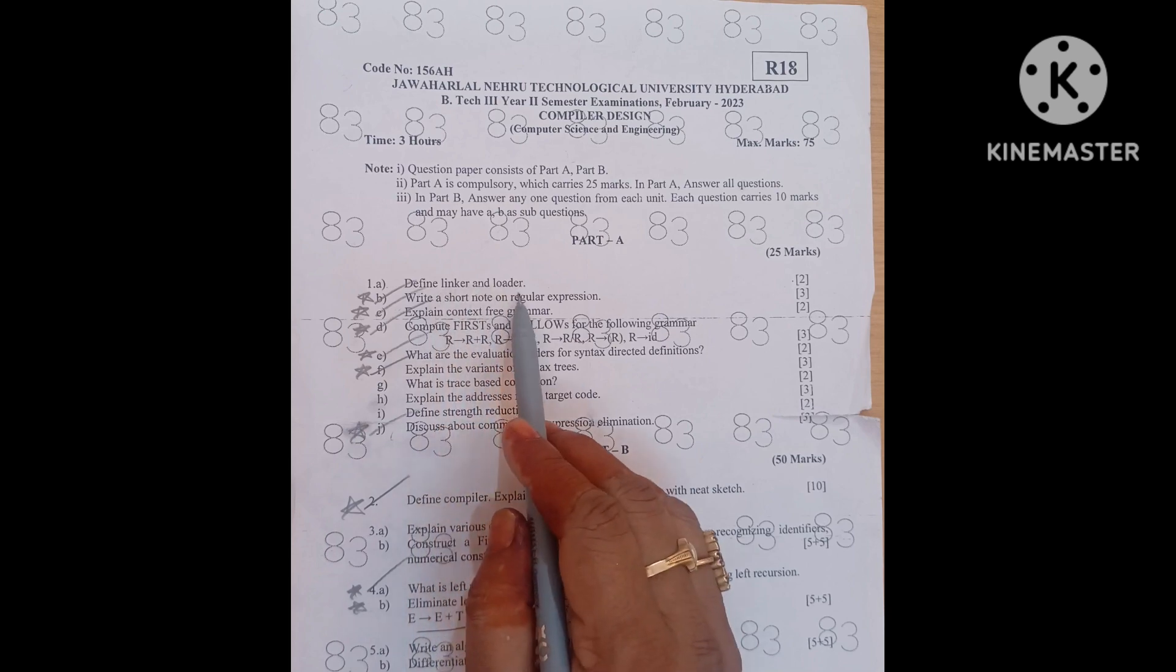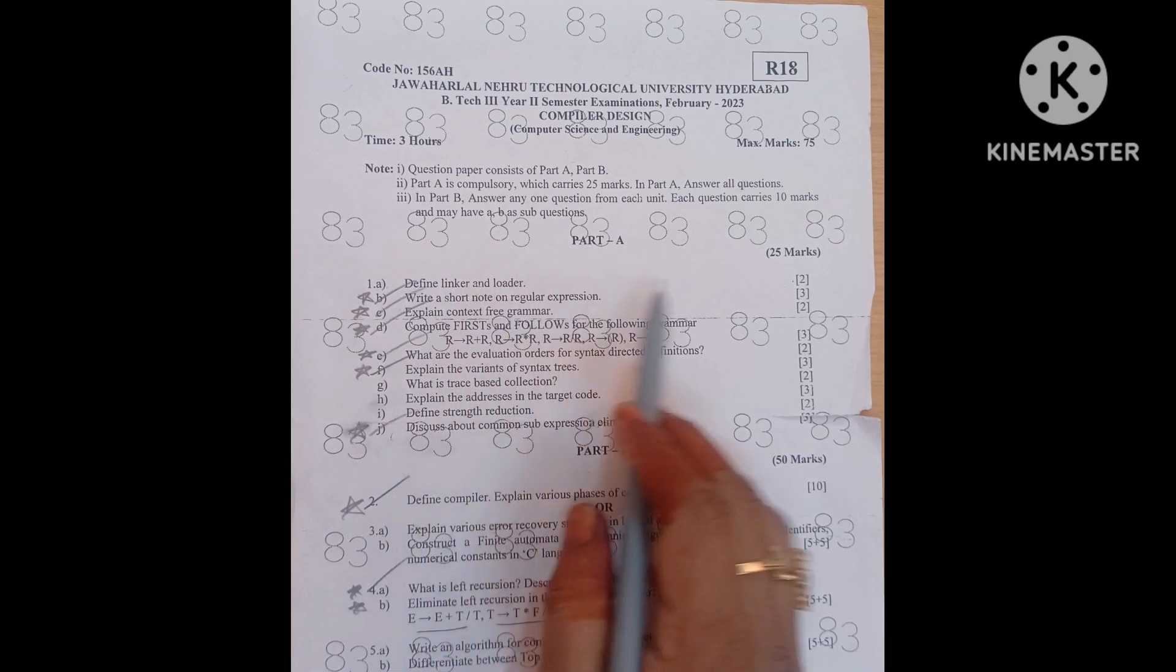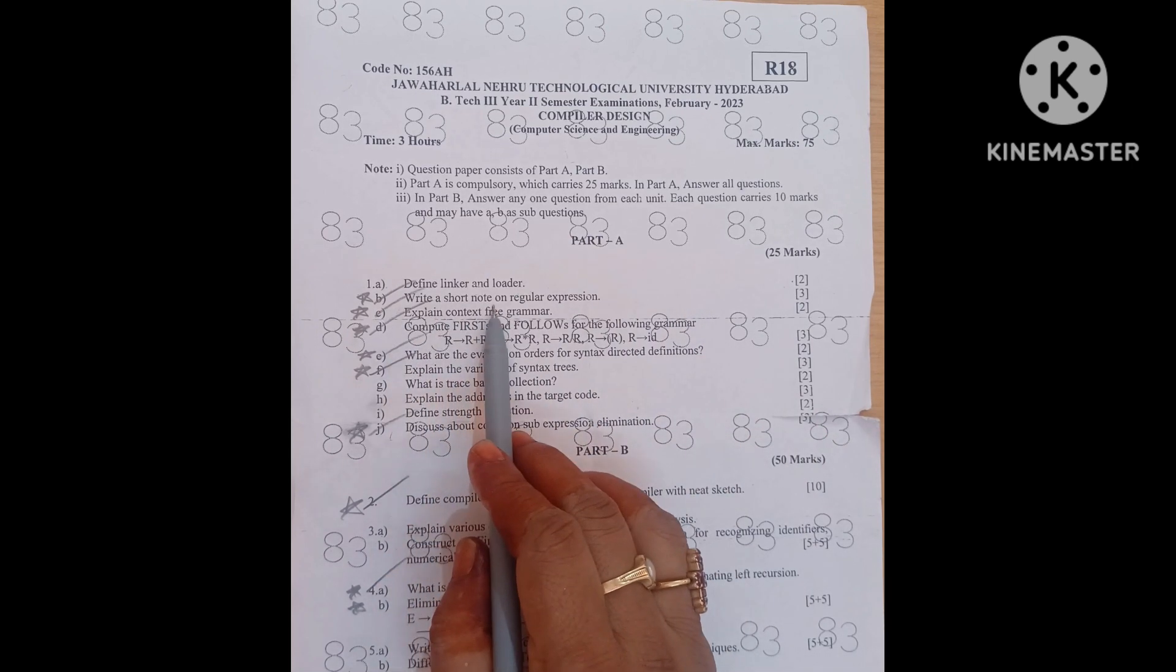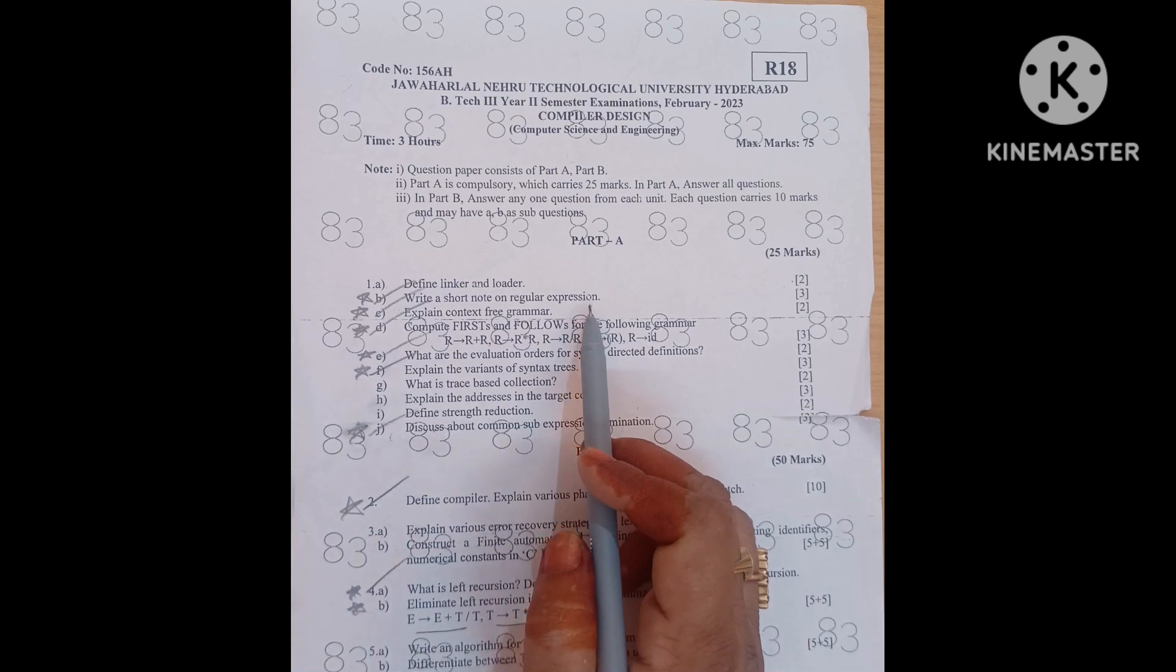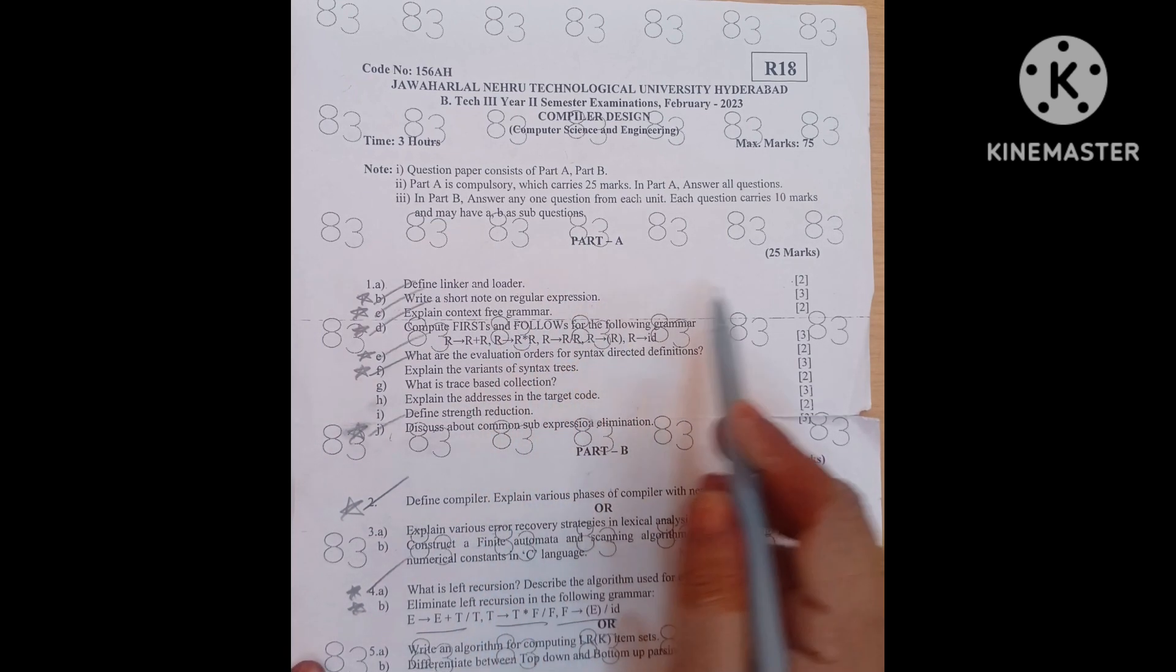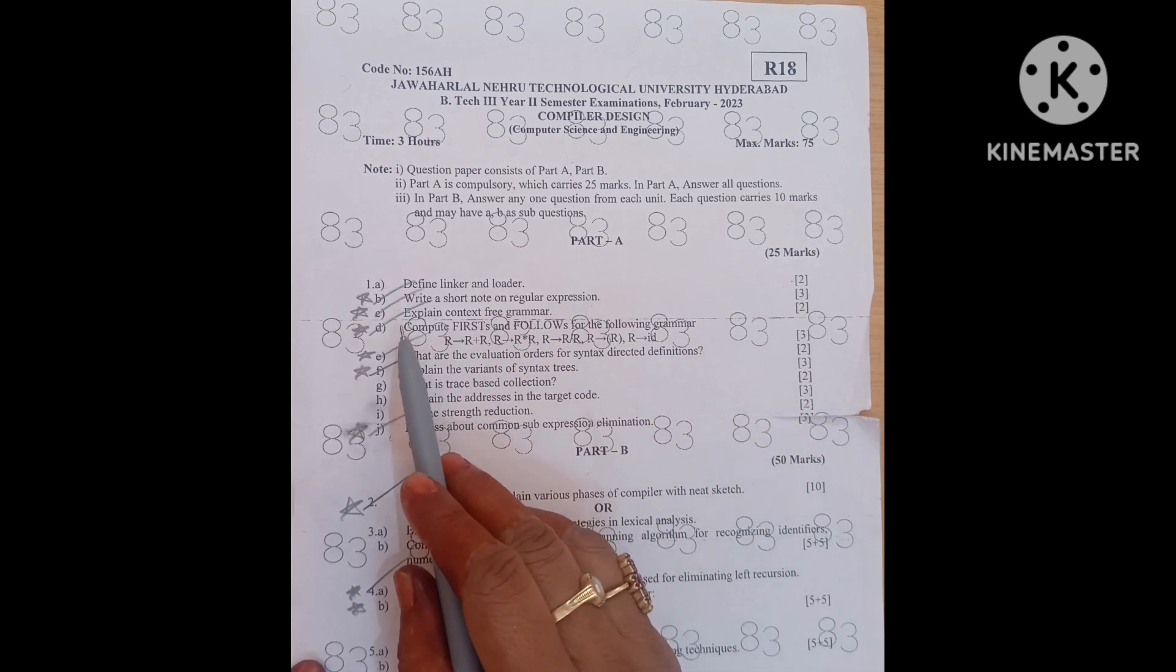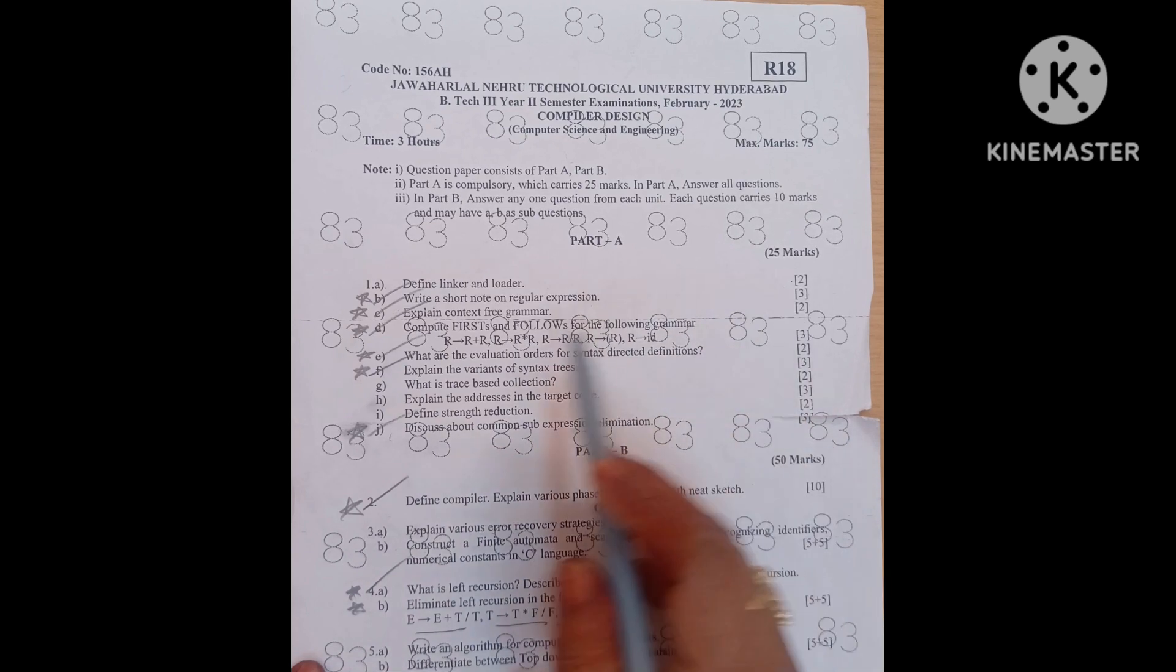First question is define linker and loader, just definitions. What is linker and what is loader? That is for 2 marks question. B is write a short note on regular expression. Yesterday only I kept old question short answer questions. Check it once. I explain all these comments there. 3 marks question. Next C is explain context free grammar. That is for 2 marks question.